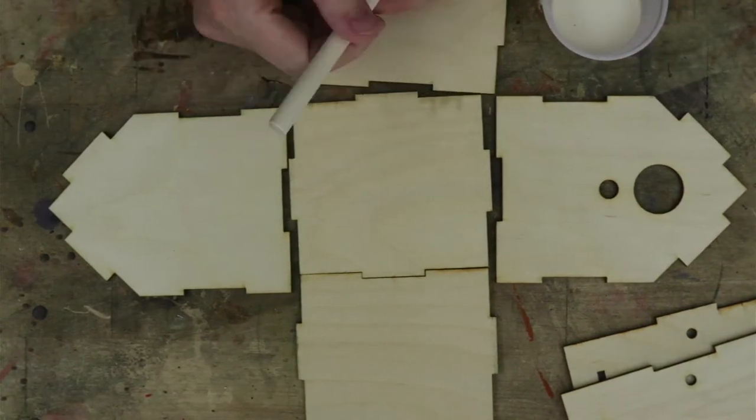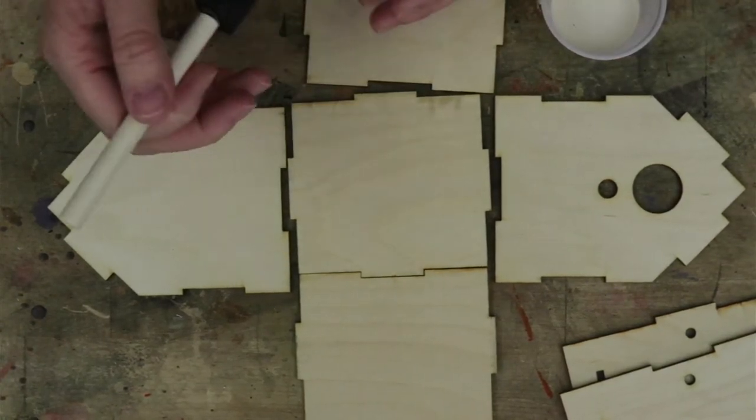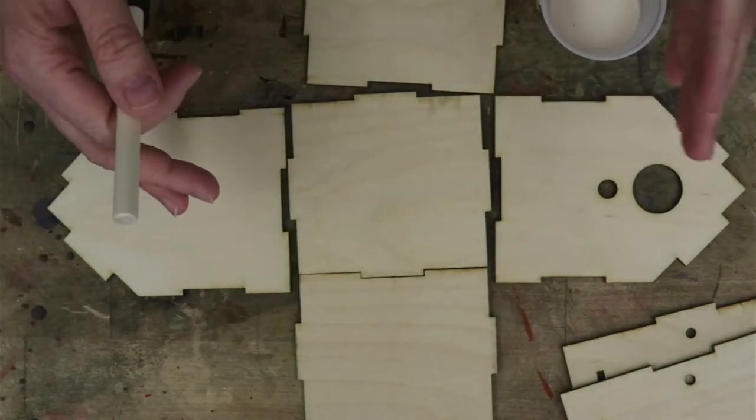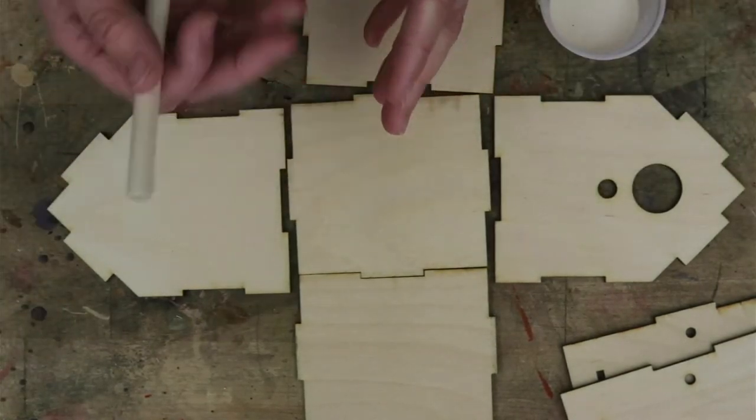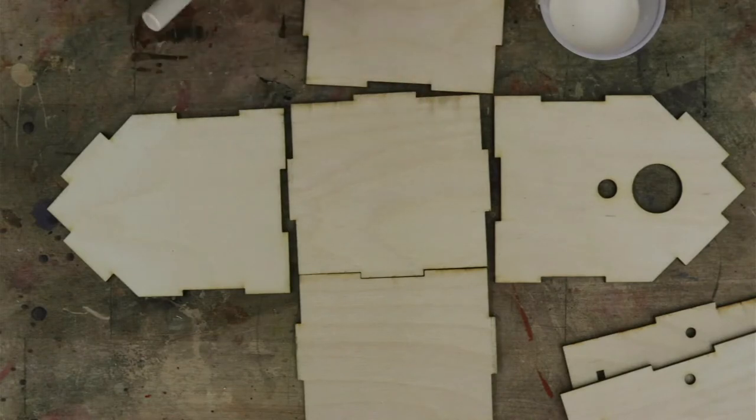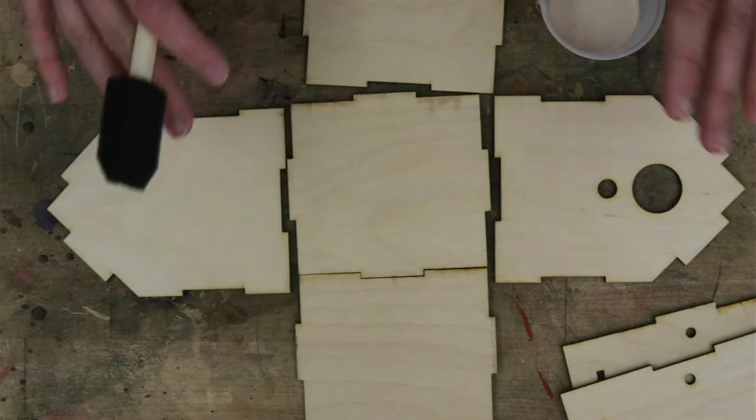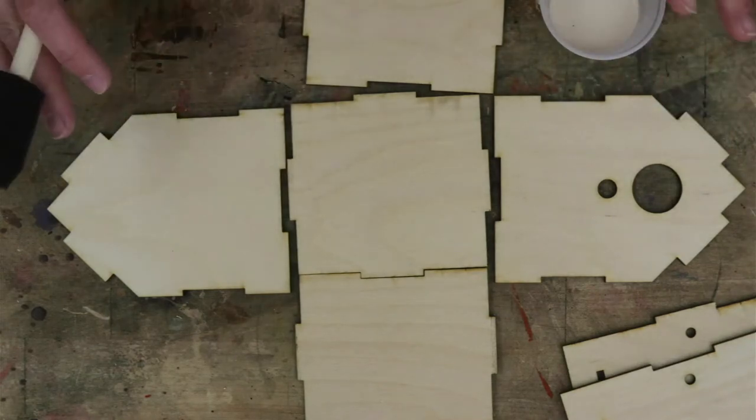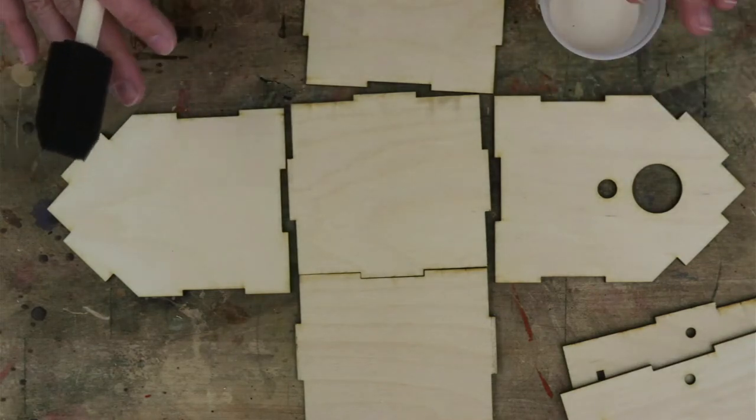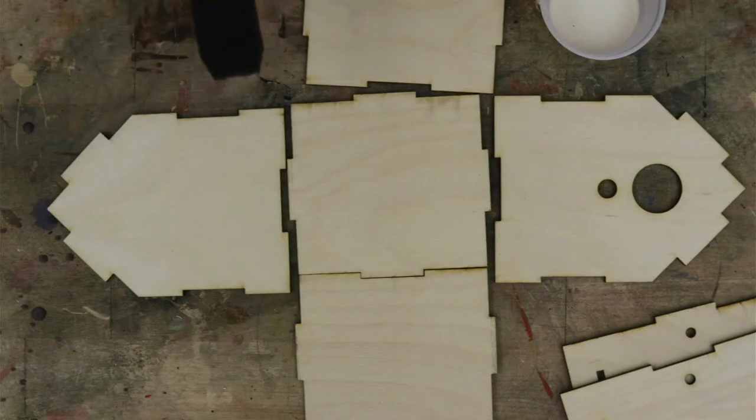Now, keep in mind, in the future, if you would like to disassemble or open the birdhouse in order to clean it out between seasons, you're going to want to leave one side, one of these pieces, unglued and instead use a nail or a screw to hold that side in place.